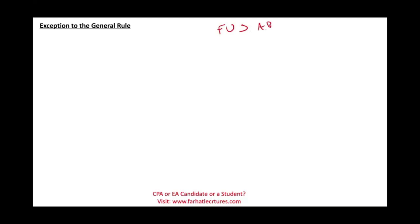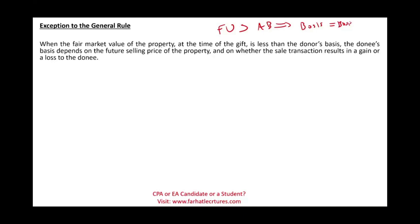Now let's look at the exception to the general rule. When the fair market value of the property at the time of the gift is less than the donor's adjusted basis, we have the exception scenario. In this case, the donee's basis is not straightforward — it depends on the future selling price of the property and whether the sale results in a gain or a loss to the donee.